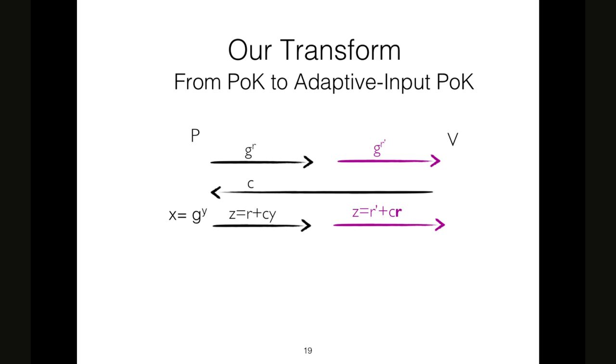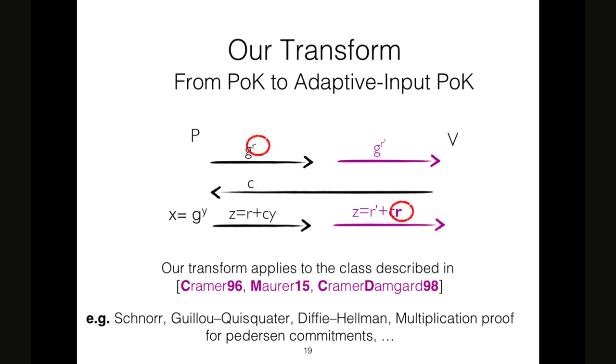The idea is to have the Schnorr protocol - I continue my example by using the Schnorr protocol. The idea is to have the Schnorr protocol, the black one, and to run in parallel another protocol, the purple one, that is necessary to prove the knowledge of the randomness used. This means that we have a fixed theorem and then the extractor can extract this value R and actually can extract the witness Y used in the Schnorr protocol, the black protocol. This transform applies to a large class of sigma protocols discussed in this work that are the most used sigma protocols, actually.